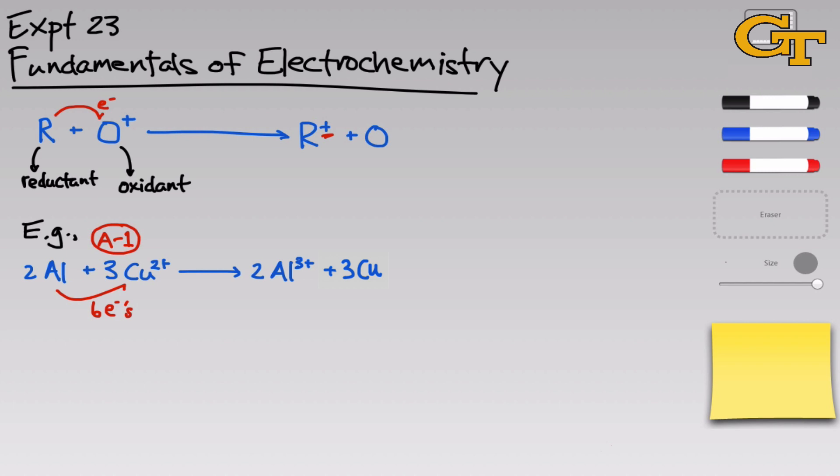Note the overall formal charge on each side of the equation. We have six positive charges on the left, three copper 2+ ions, and we have six positive charges on the right, two aluminum 3+ ions. So on the whole, six electrons are transferred in this redox reaction.